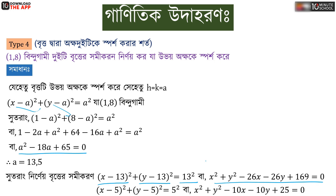Now we know that x minus 5 whole square plus y minus 5 whole square equal to 5 squared. Thank you.